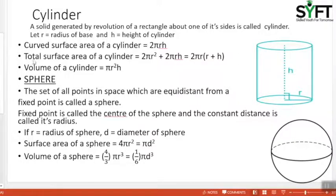Cylinder. A solid generated by revolution of a rectangle about one of its sides is called a cylinder. If a rectangle is moved or revolved about one of its sides, it forms a cylinder.